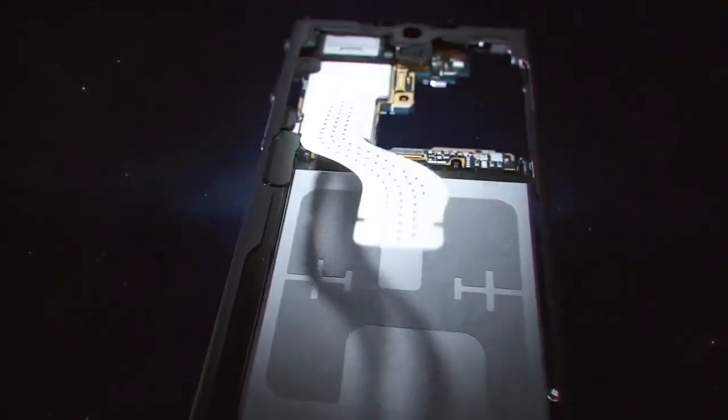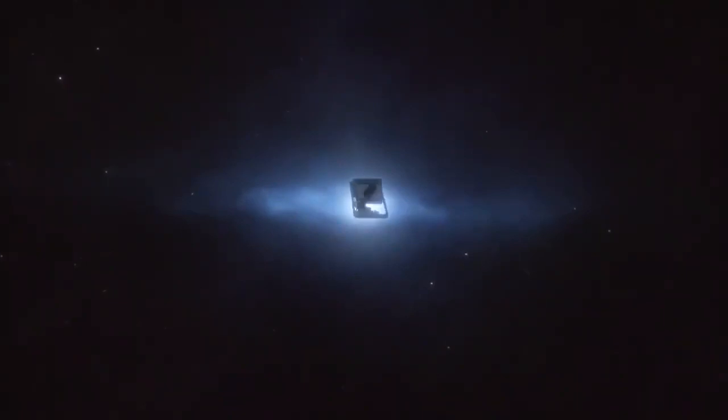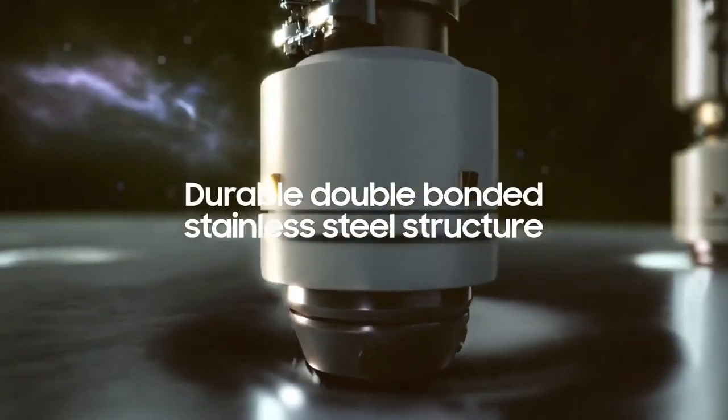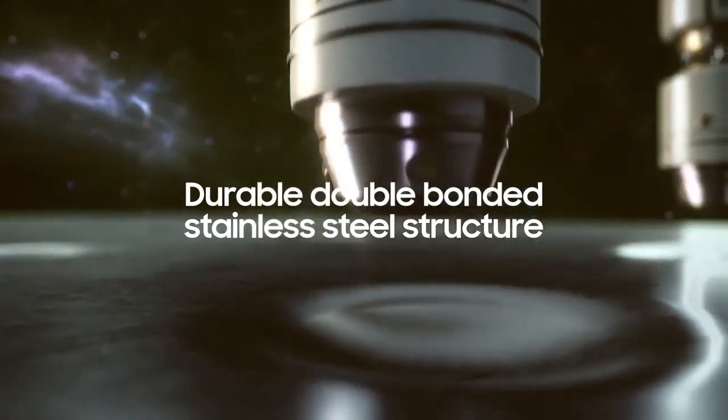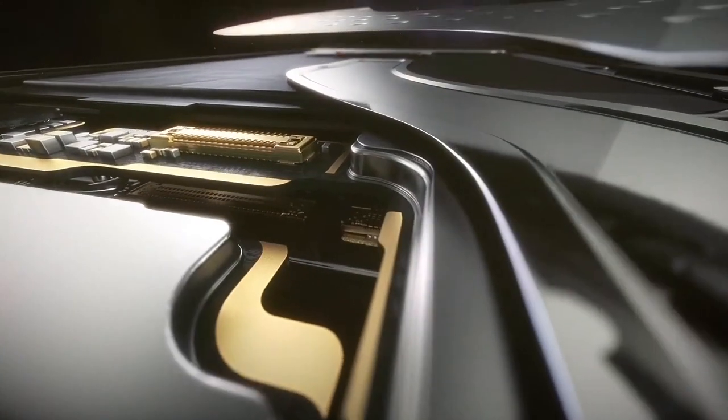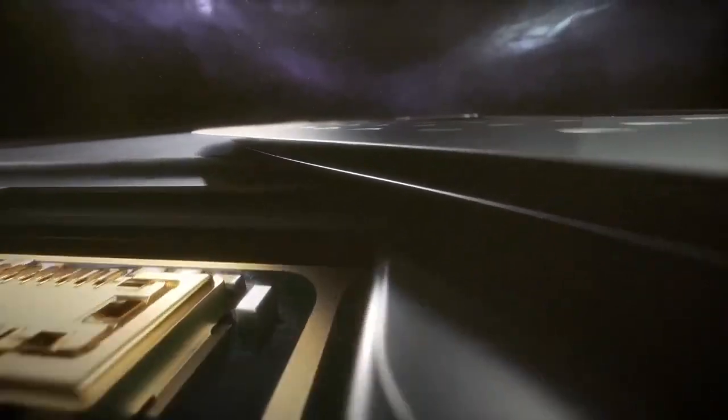The new vapor chamber is designed to cover the area from the AP to the battery, enabling a more efficient heat transfer. It's made of a new, double bonded stainless steel that's pressed in a way that allows the VC to stay thin and cover more area, while also being more durable under pressure.